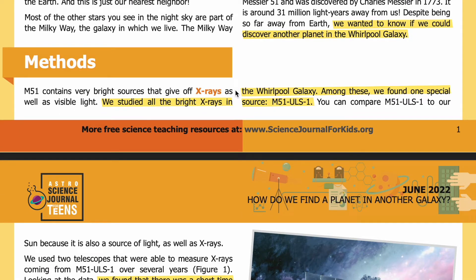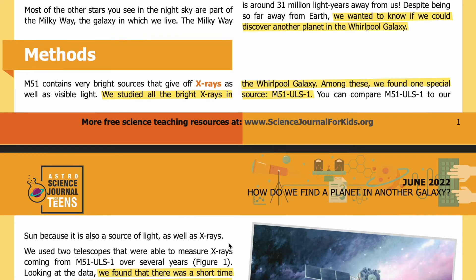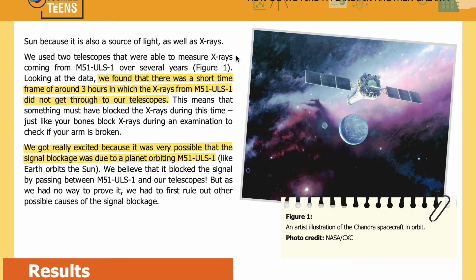Methods: M51 contains very bright sources that give off X-rays as well as visible light. We studied all the bright X-ray sources in the Whirlpool Galaxy, and among these we found one special source: M51-ULS-1. You can compare M51-ULS-1 to our sun, because it is also a source of light as well as X-rays. We used two telescopes to measure X-rays coming from M51-ULS-1 over several years. Looking at the data, we found a short time frame of around three hours in which the X-rays from M51-ULS-1 did not get through to our telescopes.